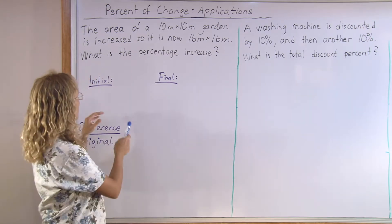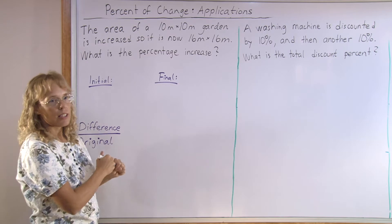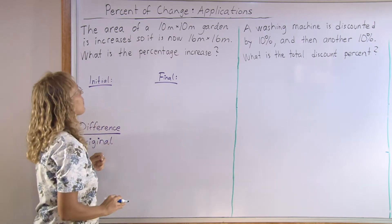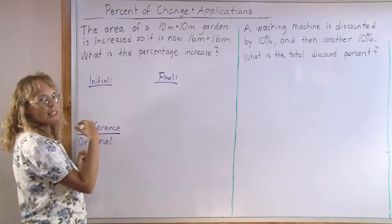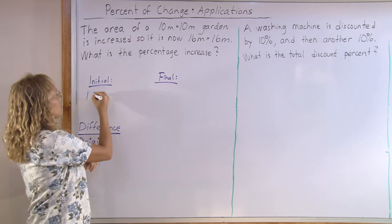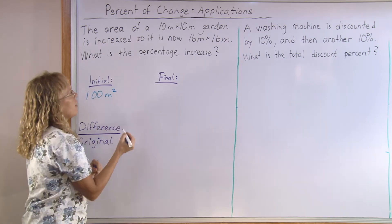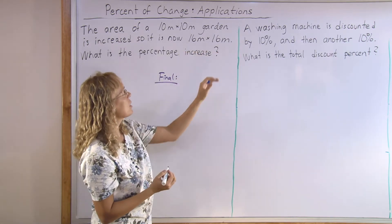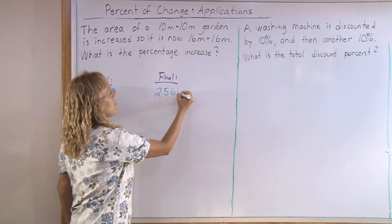So, let's first solve how much is the area of the garden. First, the area of the garden is 10 times 10 or 100 square meters. And then, finally, it is 16 times 16 or 256 square meters.